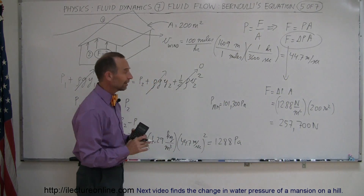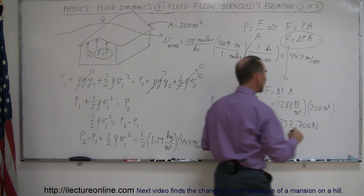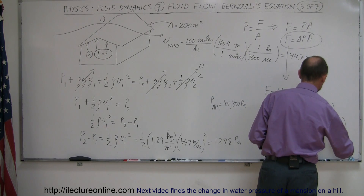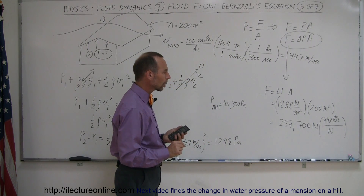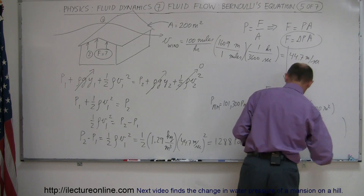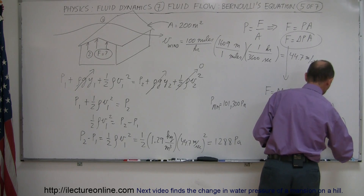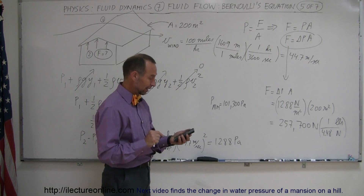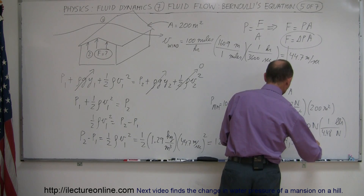Most of us aren't familiar with newtons, so let's convert to pounds. One pound is 4.48 newtons, so dividing 257,700 by 4.48 gives us a force of about 57,500 pounds.